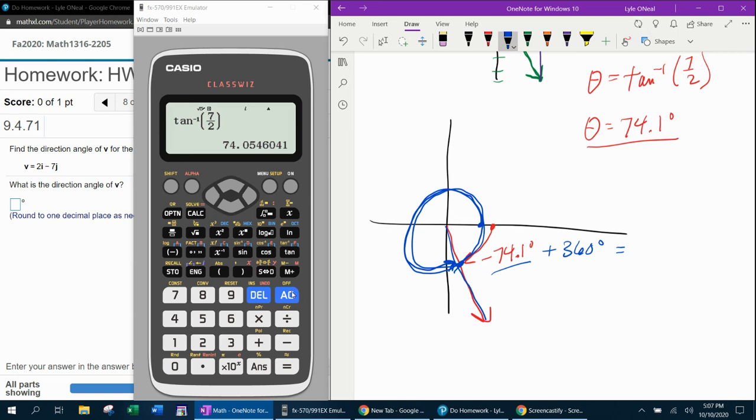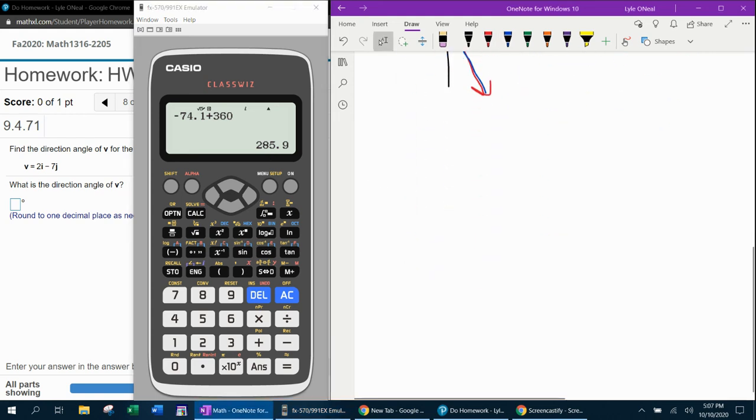So let's see here. If we go negative 74.1 plus 360, and then hit the SD button to get a decimal, that would be 285.9. So our angle should be 285.9 degrees.